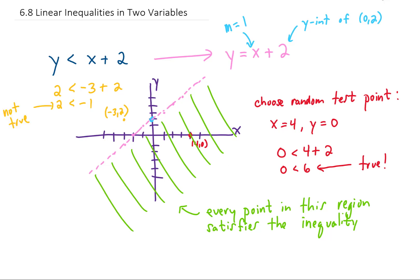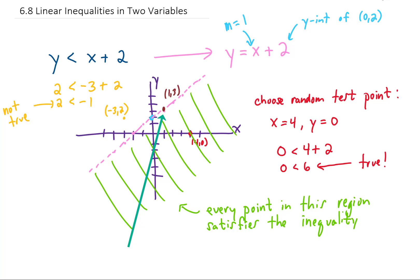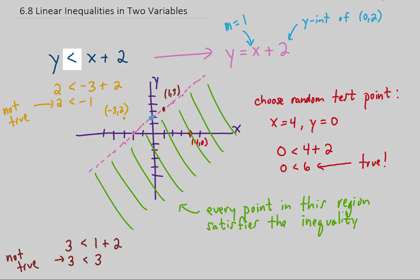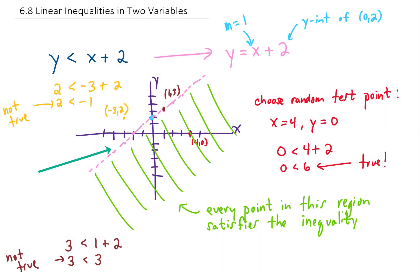What about points on the line itself? Let's take the point (1, 3), which falls directly on that line. If we plug x equals 1 and y equals 3 into the inequality, we get 3 is less than 1 plus 2, giving us 3 is less than 3 — which is not a true statement. Every point on this line will give us a statement like 5 is less than 5 or 7 is less than 7. It's close, but not true because the inequality sign does not contain an equals. Since the line is not included in the solution set, we keep the line dotted.